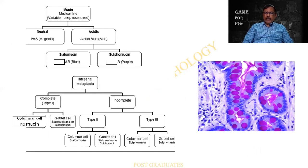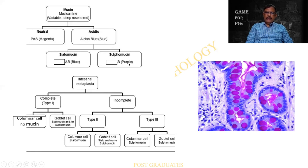This is a better and more logical flow diagram. When staining mucin with mucicarmine, it will be somewhat rose to red. If it is neutral mucin stained with PAS, it takes up a magenta color. Acidic mucin with Alcian blue gives a blue color. Sialomucin with Alcian blue gives a blue color, and sulfomucin with Alcian blue gives a purple color.